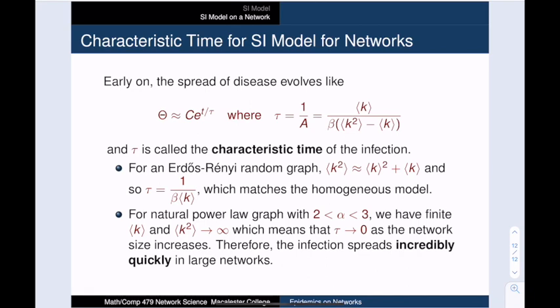But something remarkable happens on a natural power law network. The variance of our distribution increases without bound while the average degree is constant. As a consequence, the characteristic time tau converges to zero, and this means that for large networks adhering to a natural power law, the infection erupts into a full epidemic almost instantly. The hub vertices are so good at spreading the disease it takes over the majority of the network in the blink of an eye. This certainly has implications for the real world. For example, the hub design of airports becomes a major vulnerability in a pandemic. And it is also important to vaccinate and equip high-contact persons like doctors and nurses before the general population in order to mitigate a superspreader event.